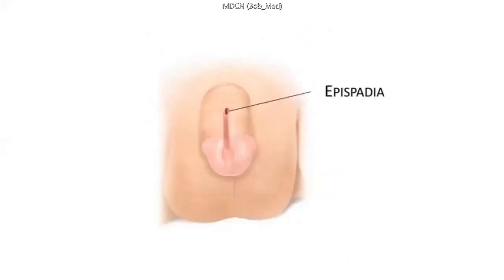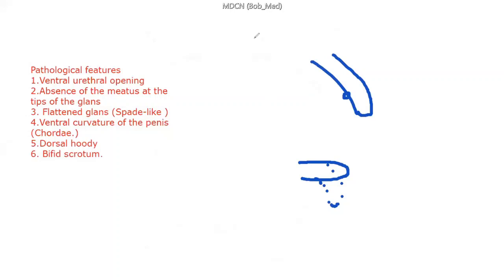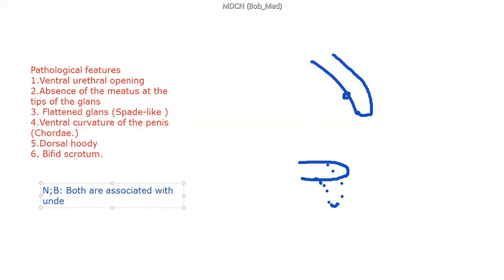An important point to remember ahead of MDCN exam: this pathology is associated with undescended testes. Both epispadias and hypospadias are associated with undescended testes.